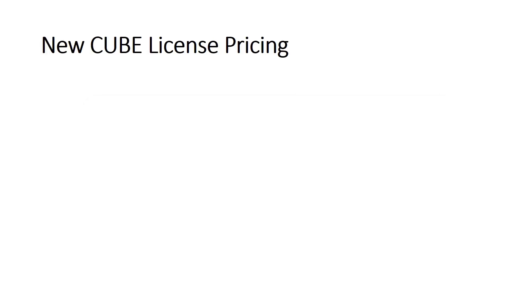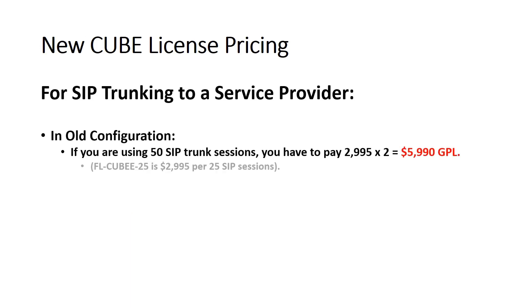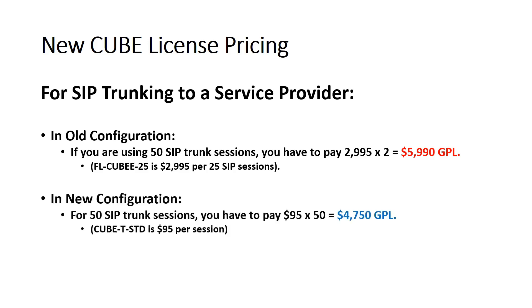Let's assume you have a 50-channel SIP trunk to a telephony provider and want to deploy Cube. In the old licensing model, you have to buy two sets of 25-port license bundles — FL-QB-25 — which costs almost $6,000 in GPL. In the new licensing model, you have to buy 50 sets of Cube-T-STD, which will cost $4,750 in GPL. So you have a $1,250 saving in this configuration.